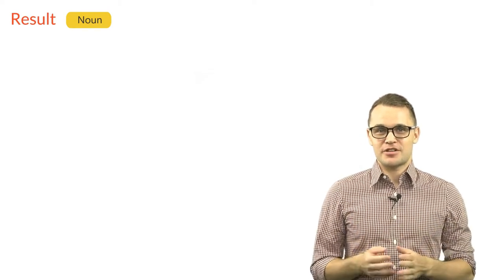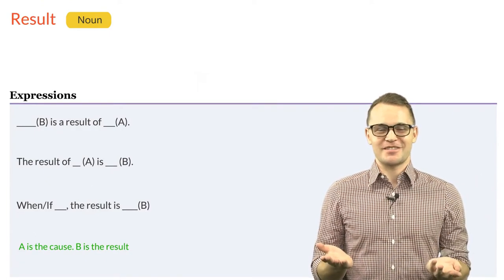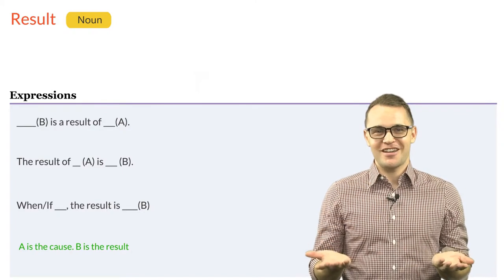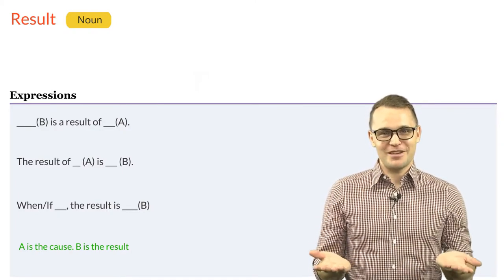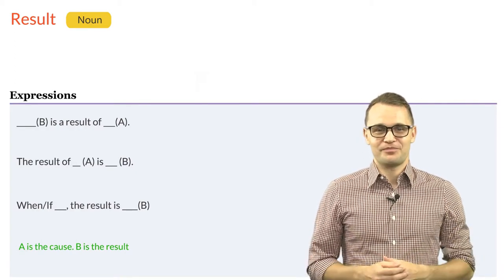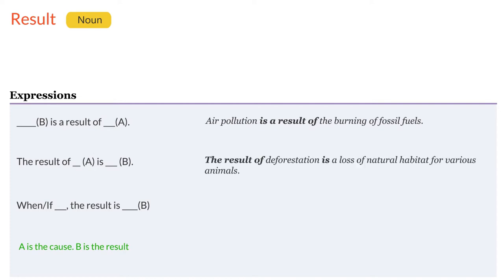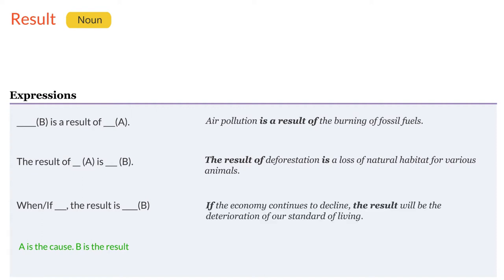The next noun we are looking at is result. The following patterns and expressions are commonly used with the noun result. Note that here as well A is the cause and B is the result: B is the result of A, or the result of A is B, or when or if something happens the result is B. For example: air pollution is a result of the burning of fossil fuels. The result of deforestation is a loss of natural habitat for various animals. If the economy continues to decline, the result will be the deterioration of our standard of living.